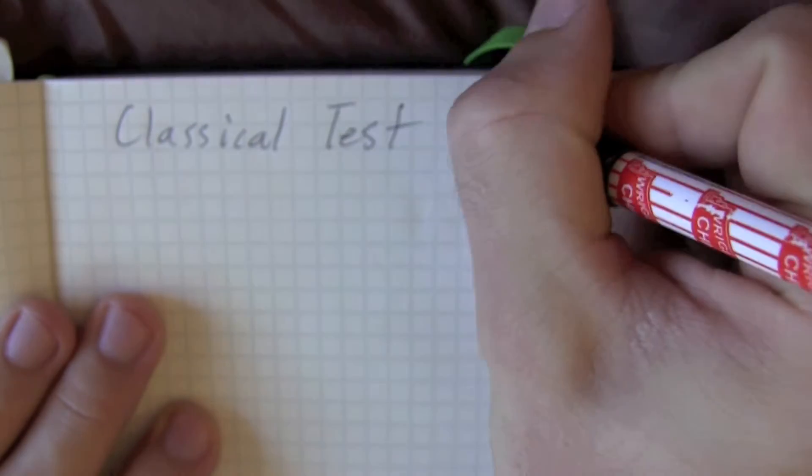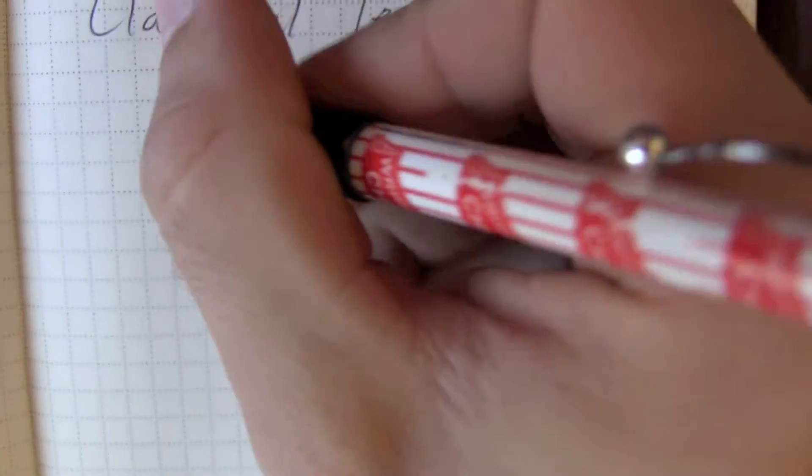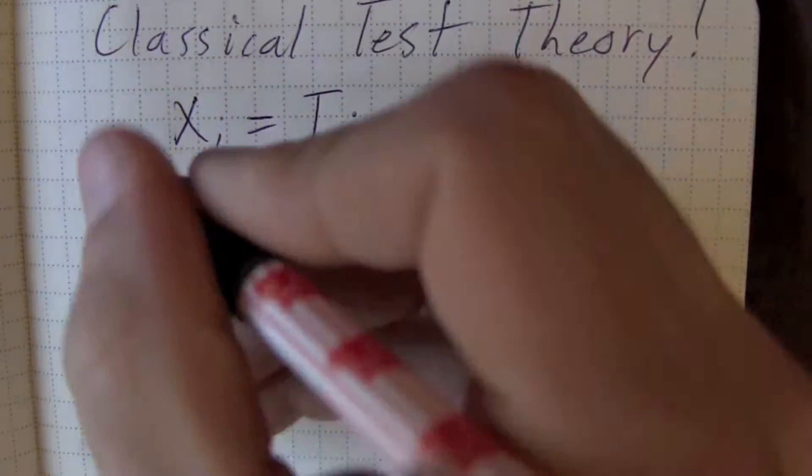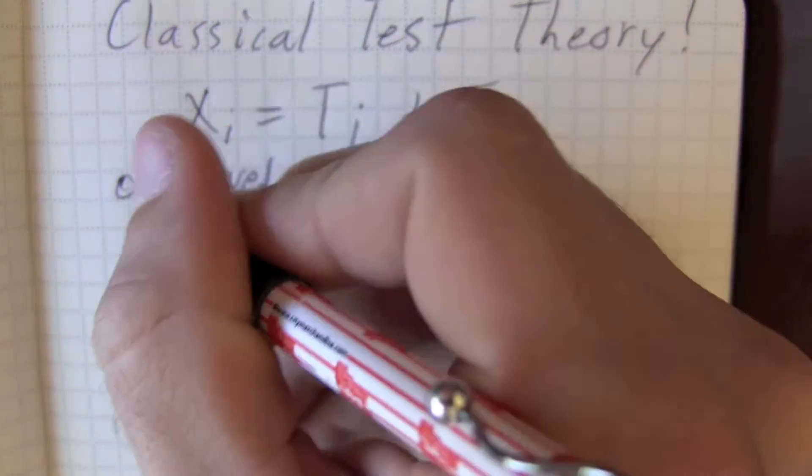Today's video is going to be Vi Hart style. Classical test theory. Boom. Classical test theory is used to make sure that the questions you're asking are actually measuring what you're interested in finding out.